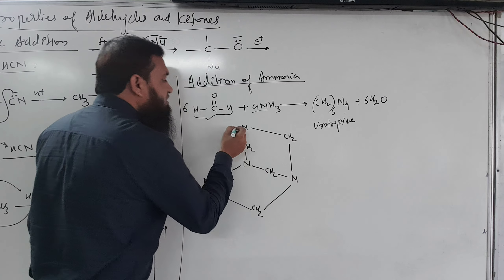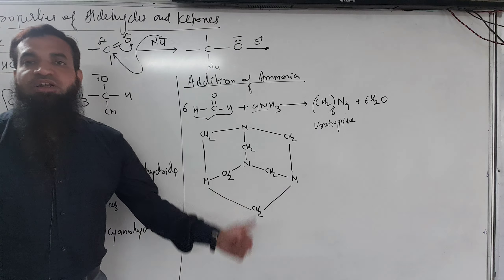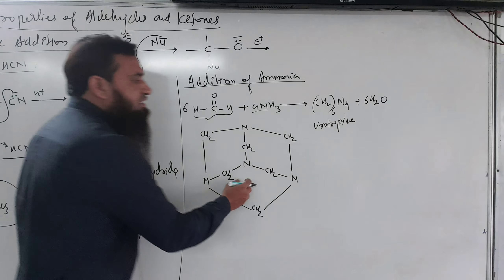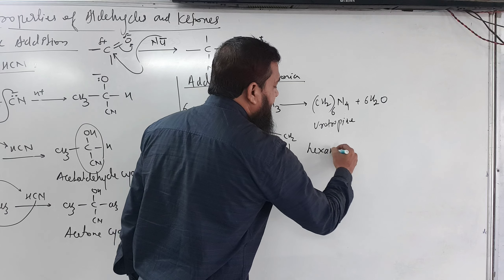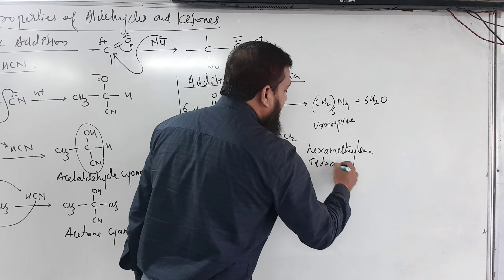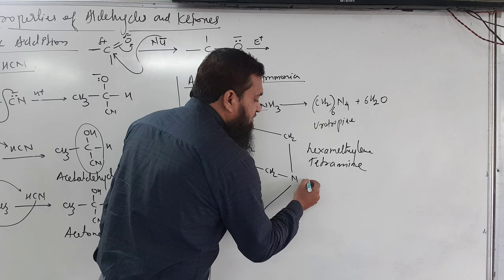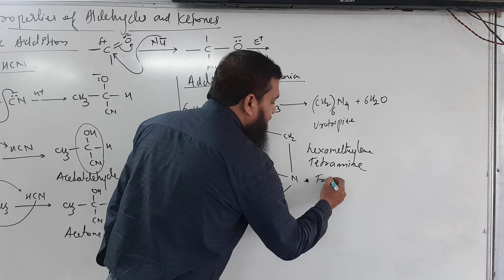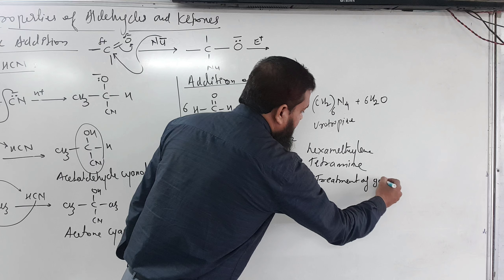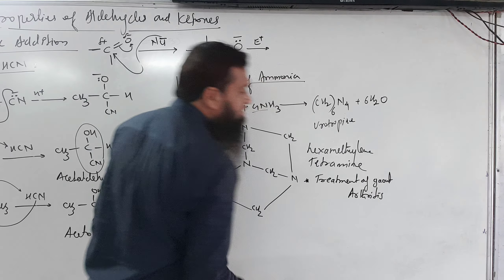In the structure of urotropin, each nitrogen is connected to three CH2 groups, and these nitrogens are connected with CH2 groups. There is no direct bond between carbon-carbon or nitrogen-nitrogen. This is hexamethylene — six methylene groups — hence hexamethylene tetramine.